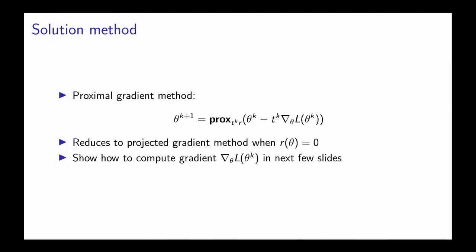The solution method that we propose for this problem is a proximal gradient method. The method works by first taking a step in the negative direction of the gradient of the prediction error L, and then performing a proximal step for the function r.